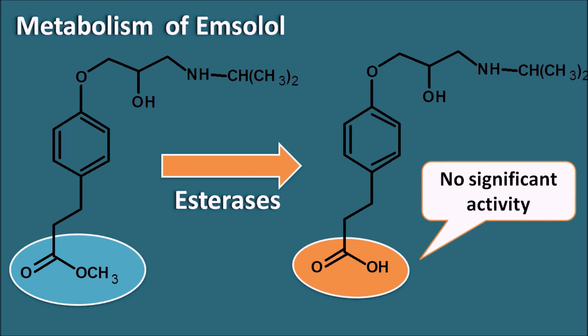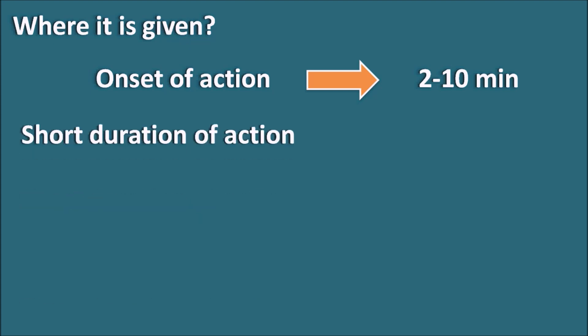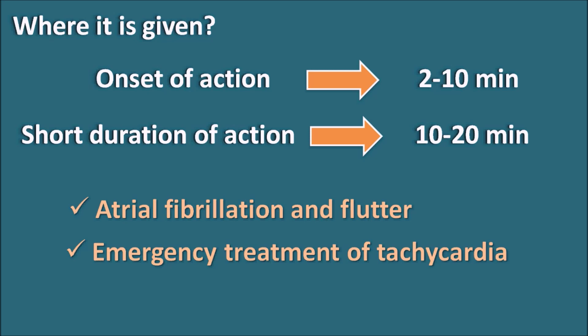Esmolol has a half-life of around 9 minutes and an onset of action of around 2 to 10 minutes. The onset of action can be improved by adding a loading dose along with the IV infusion. The duration of action of esmolol is very short — around 10 to 20 minutes — and because of this short duration of action, esmolol is given by IV infusion. It can be used in conditions such as atrial fibrillation and flutter, and in the emergency treatment of tachycardia.